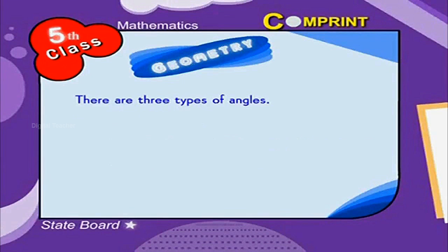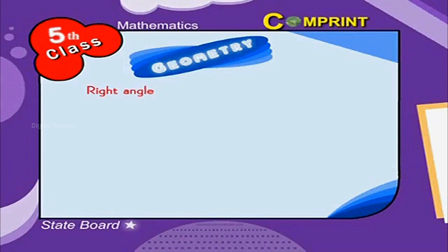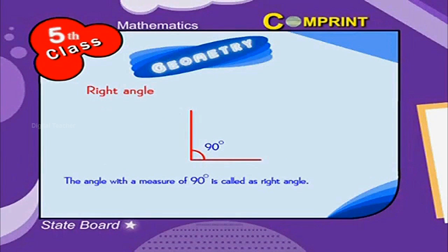There are three types of angles: Right Angle, Obtuse Angle, and Acute Angle. Right Angle: The angle with a measure of 90 degrees is called a Right Angle.